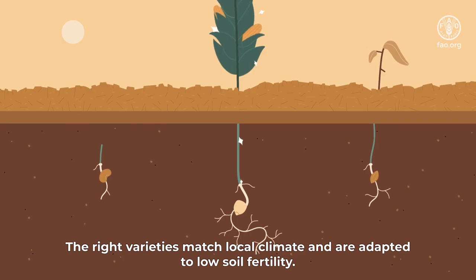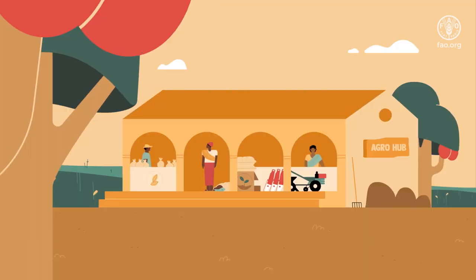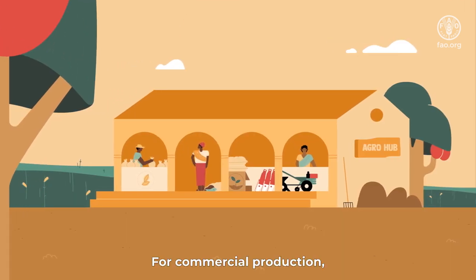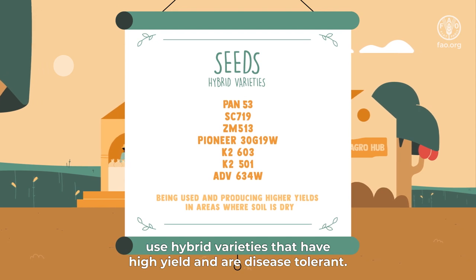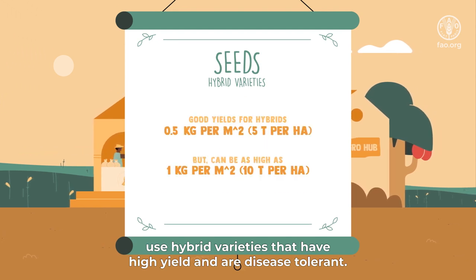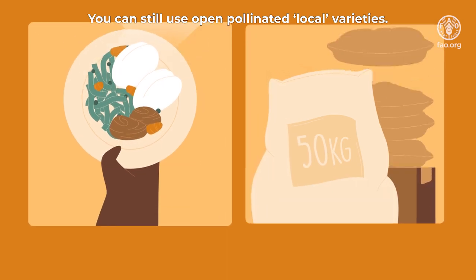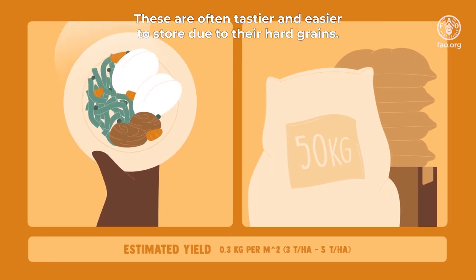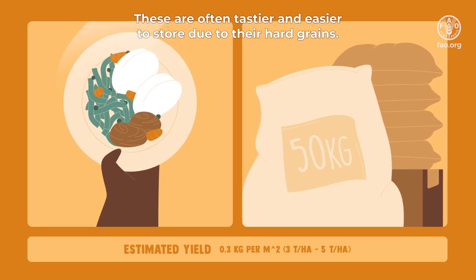The right varieties match local climate and are adapted to low soil fertility. For commercial production, use hybrid varieties that have high yield and are disease tolerant. You can still use open pollinated local varieties, which are often tastier and easier to store due to their hard grains.